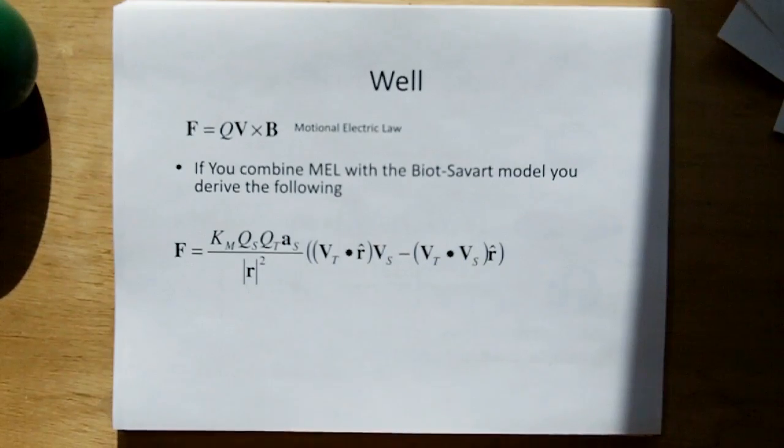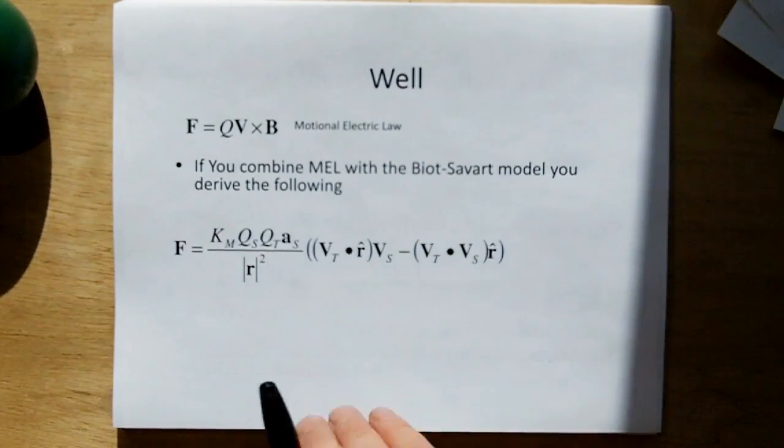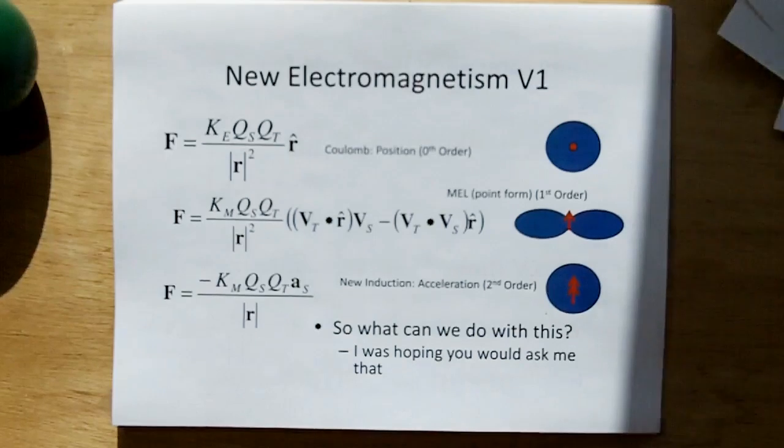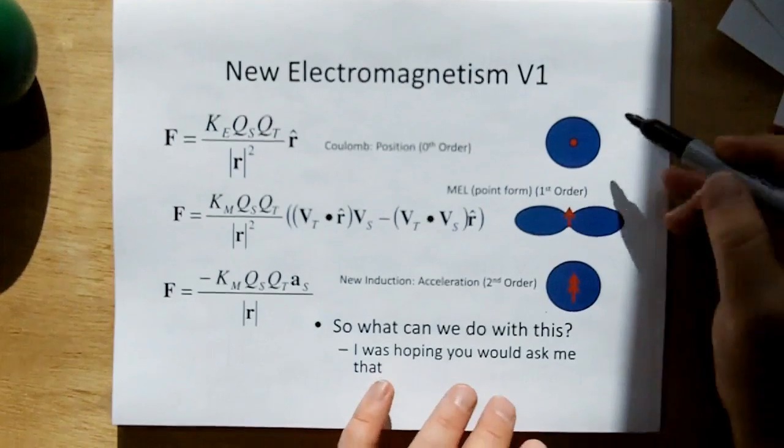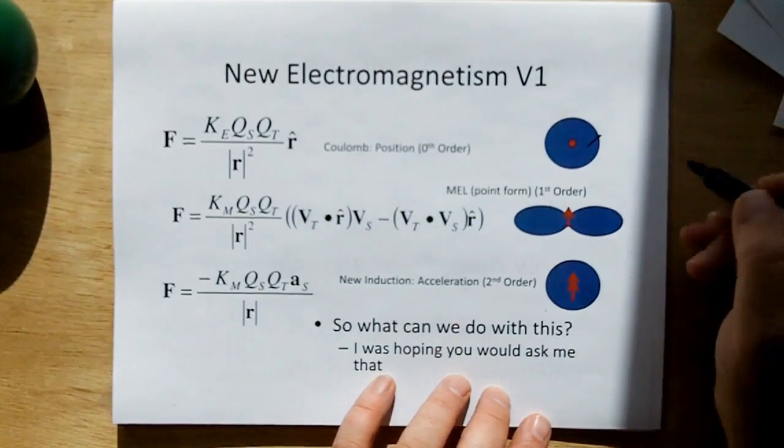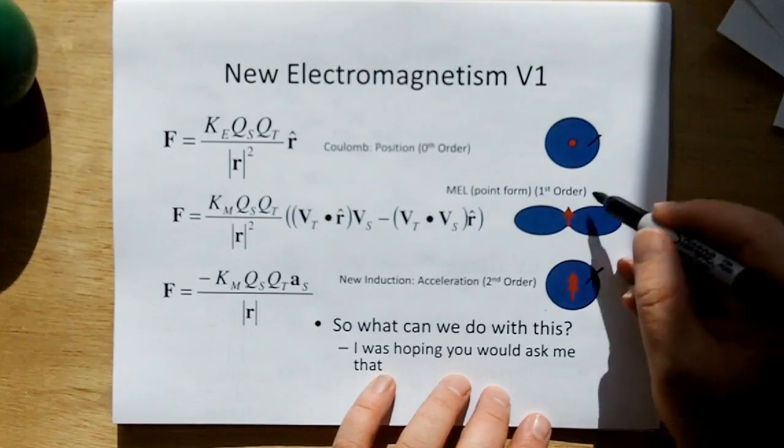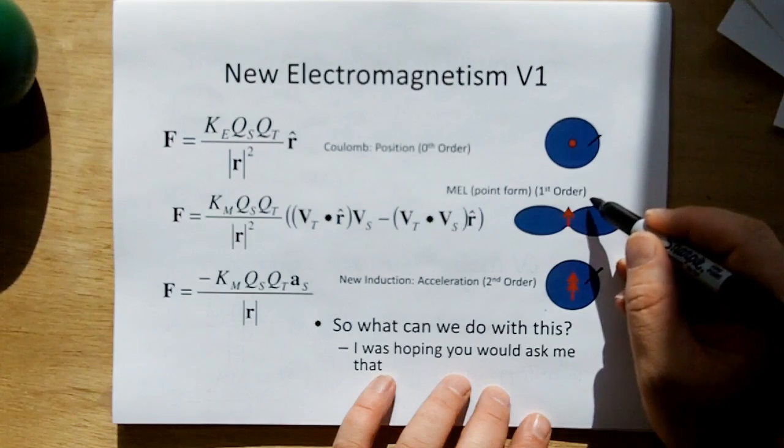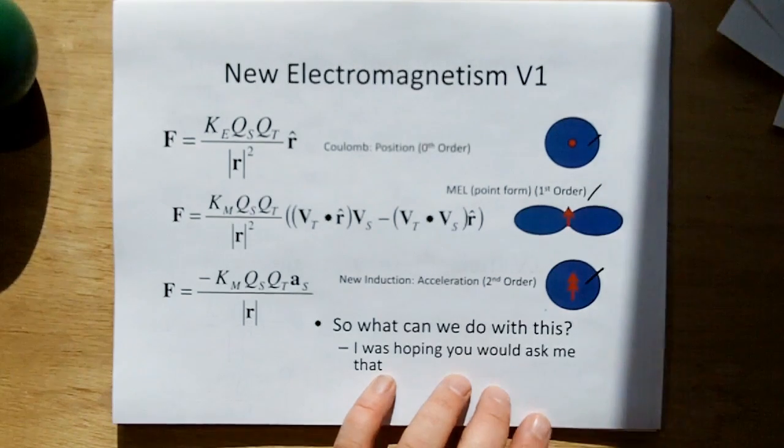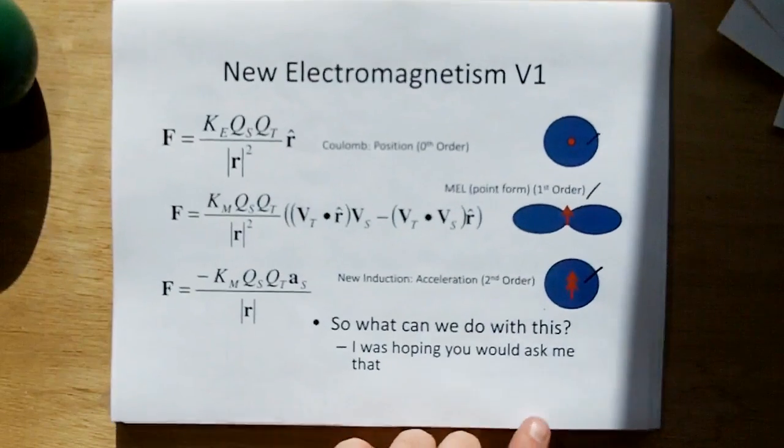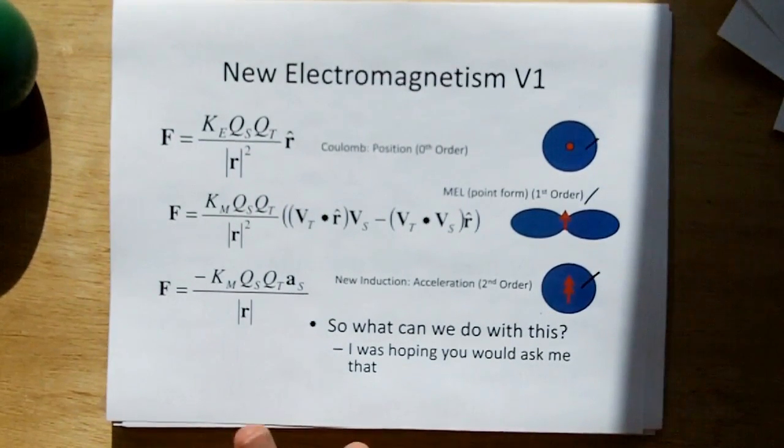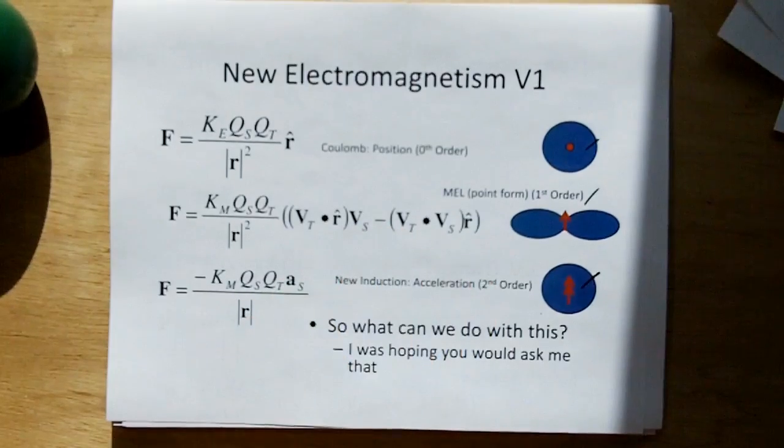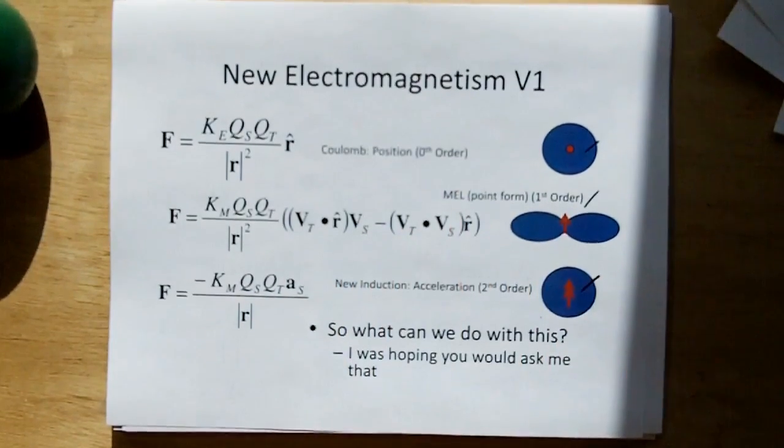There might be higher order components, but either they are so small we haven't noticed them, or they're just not there. Or maybe they are there and we just never have run an experiment, or maybe we've mistaken them for something else. But right now I'm just going to stick with second order until we can find that there's anything else. So we already have one for position and one for acceleration. What about velocity?